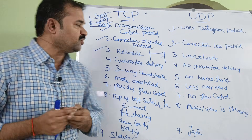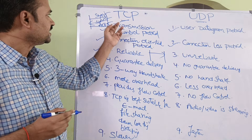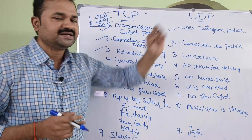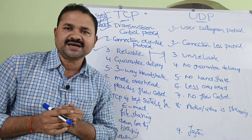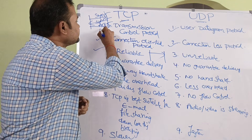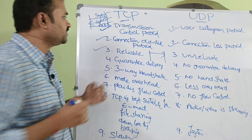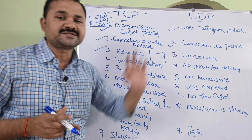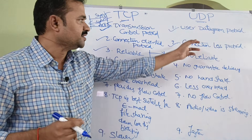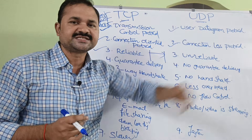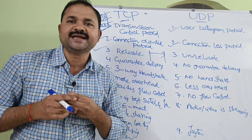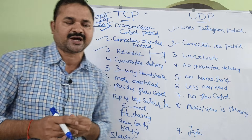Let us discuss the differences between TCP and UDP. TCP stands for Transmission Control Protocol, whereas UDP stands for User Datagram Protocol.